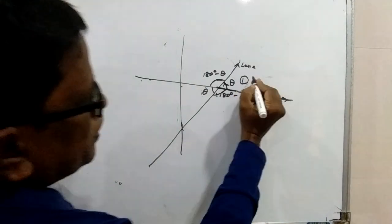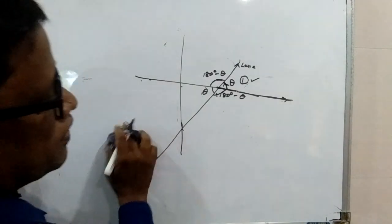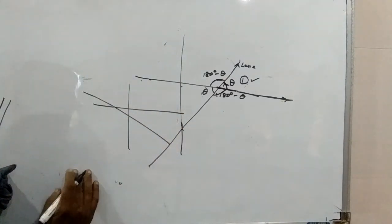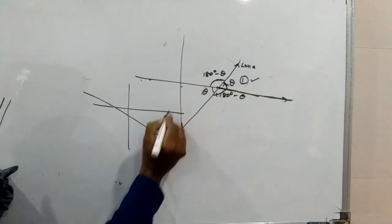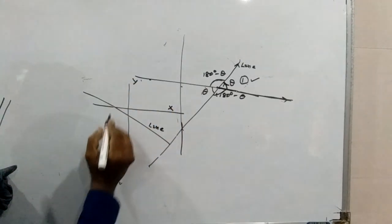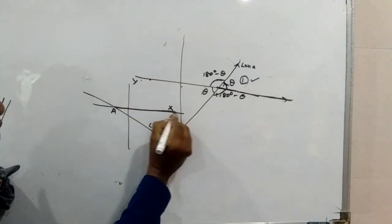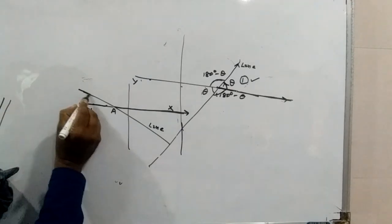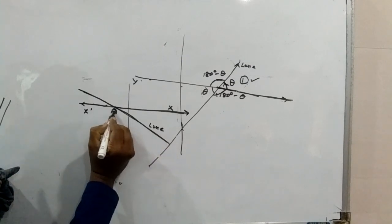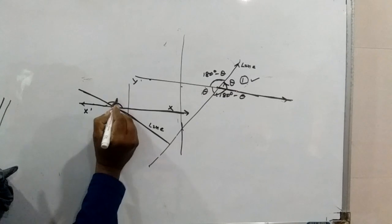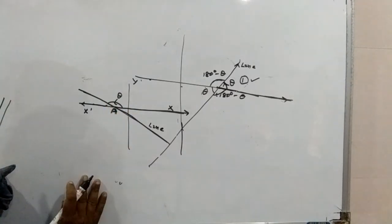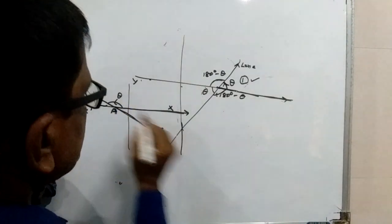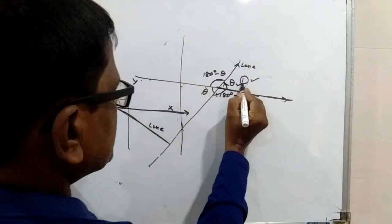Suppose we are considering another line. Here there is a line crossing the X axis at point A. AX is your positive direction, AX-dash is your negative direction. Suppose the line is moving in this direction from point A. The angle made by the line with the positive direction of X axis in anticlockwise sense — this angle will be the inclination angle. Theta is the inclination angle.